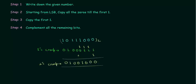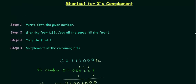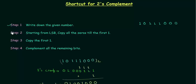Now we will move to the shortcut method and try to obtain 2's complement. Step number 1 is to write down the given number. So the given number is 1 0 1 1 1 0 0 0. I will write it down: 1 0 1 1 1 0 0 0. So we are done with step number 1.